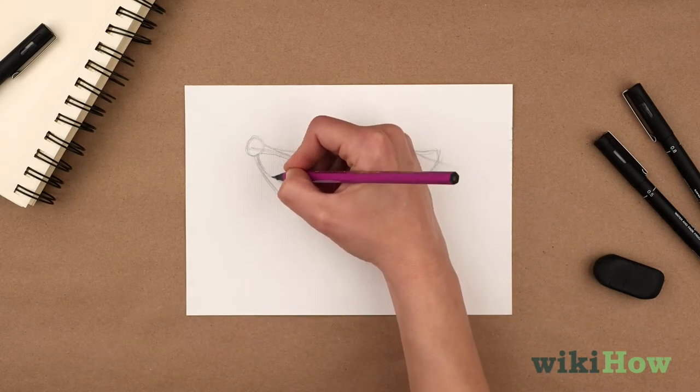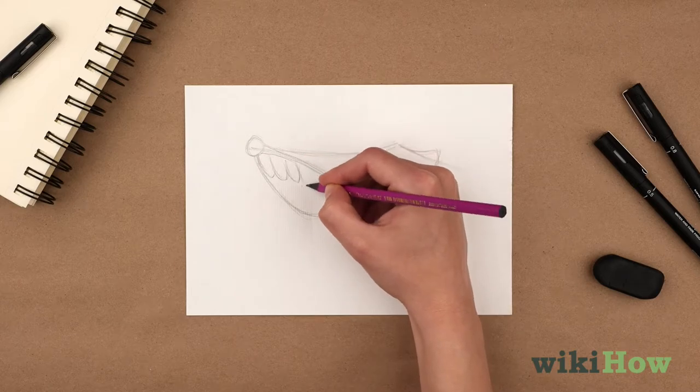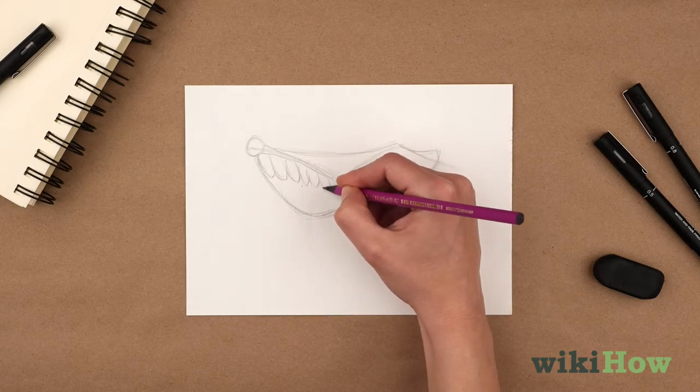Fill the area beneath the wing bones with the first layer of feathers. These should look like a series of overlapping U-shapes.